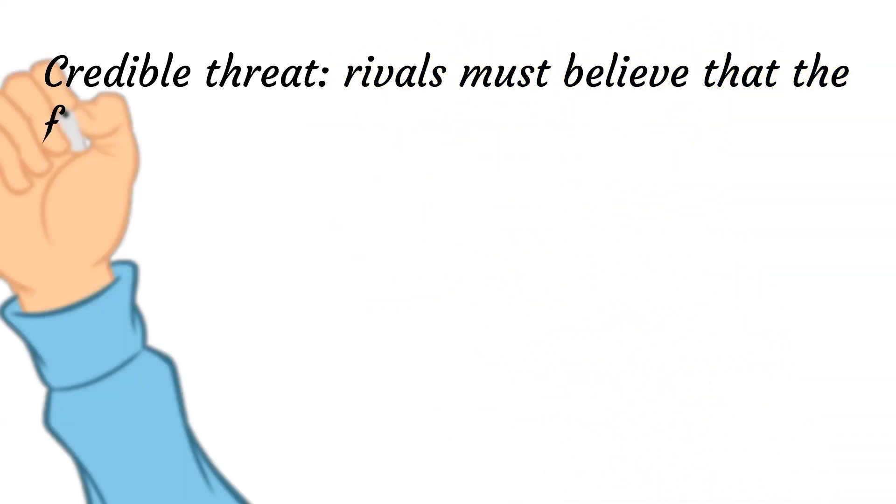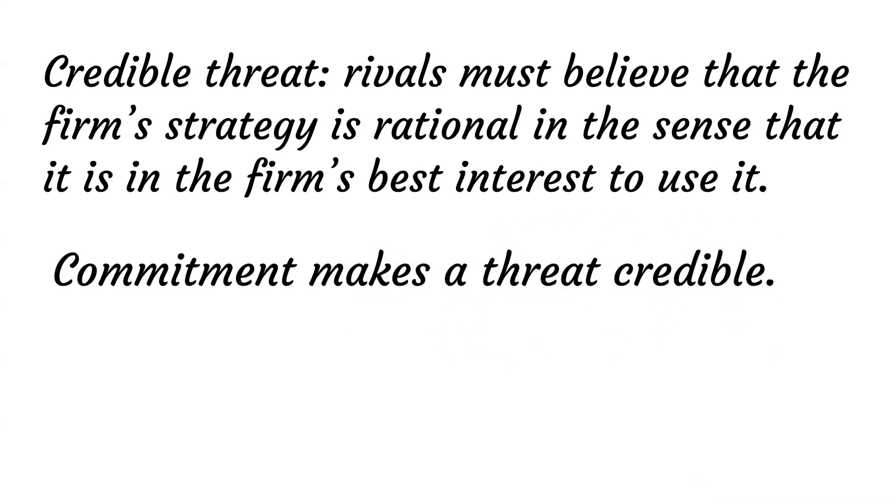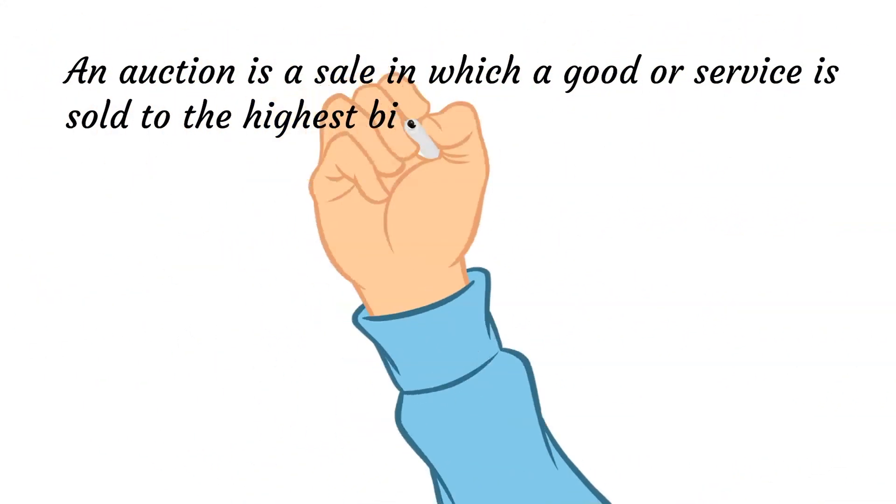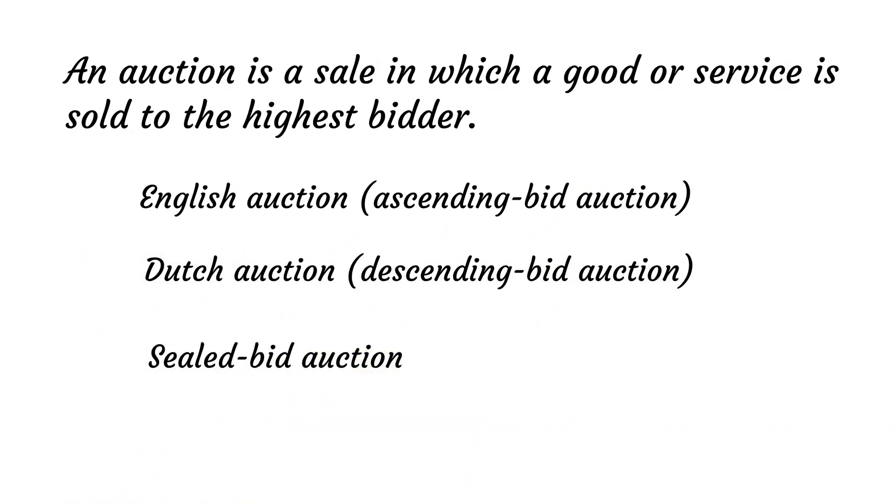For a firm's strategy to be a credible threat, rivals must believe that the firm's strategy is rational, in the sense that it is in the firm's best interest to use it. A firm may be able to make its threatened behavior believable if it acts before the other. An auction is a sale in which a good or service is sold to the highest bidder. Virtually all auctions are variants of the English auction, the Dutch auction, and the sealed-bid auction.